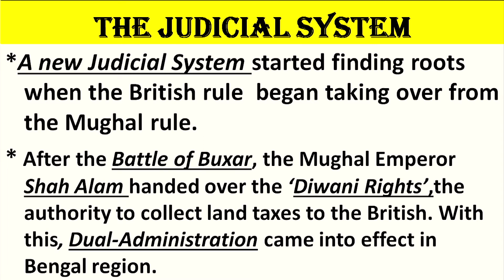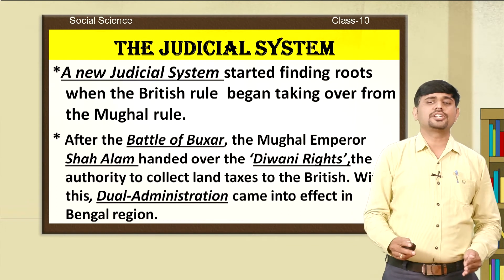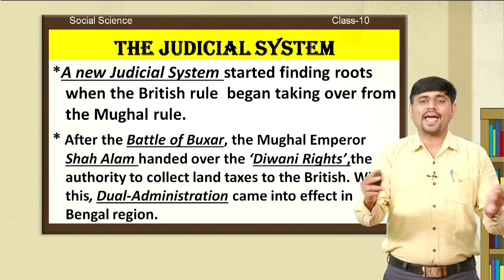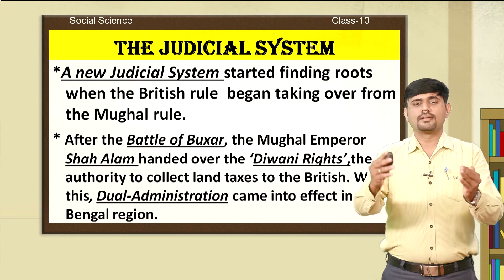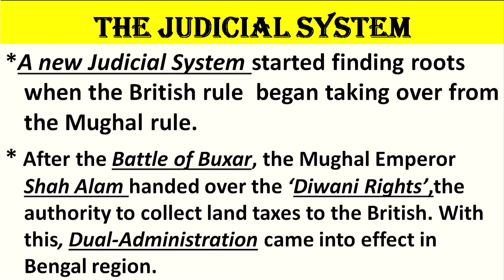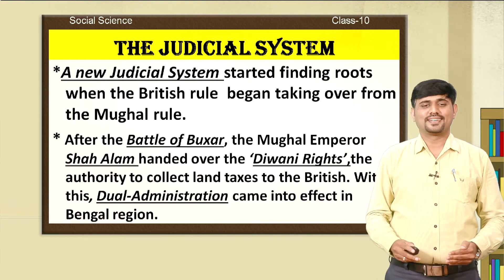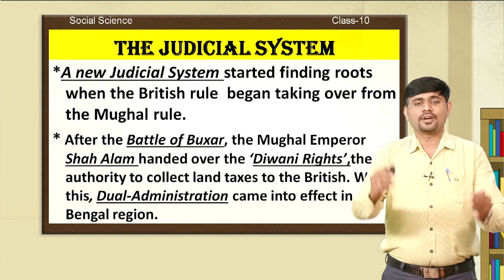Followed by the administrative reforms, let us study about the judicial system of the British East India Company. The British government brought several reforms to the judiciary system of India. A new judicial system started finding roots when the British rule began taking over from the Mughal rule — the time the Mughal Empire was declining. After the Battle of Baksar, the Mughal Emperor Shah Alam handed over the Diwani rights — the authority to collect land taxes — to the British. With this, dual administration came into effect in the Bengal region.